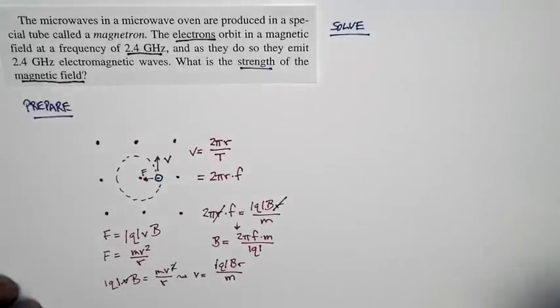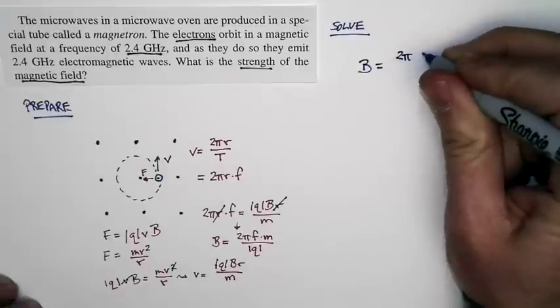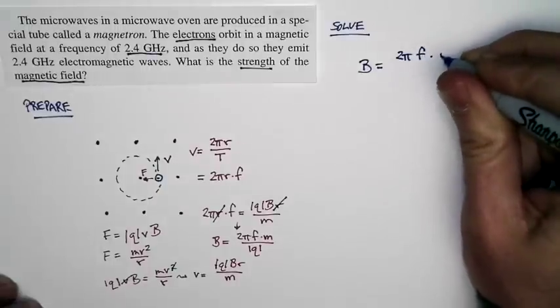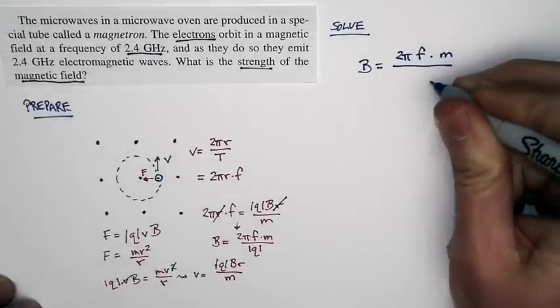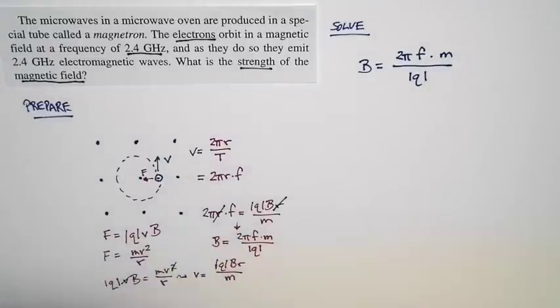Well, a solution is very, very straightforward. We have an expression for B. The magnetic field is 2 pi times f times m, which is the mass of the electron, divided by the magnitude of the charge. And these are numbers that we know.